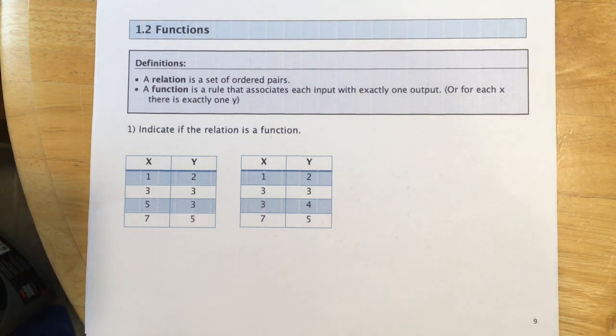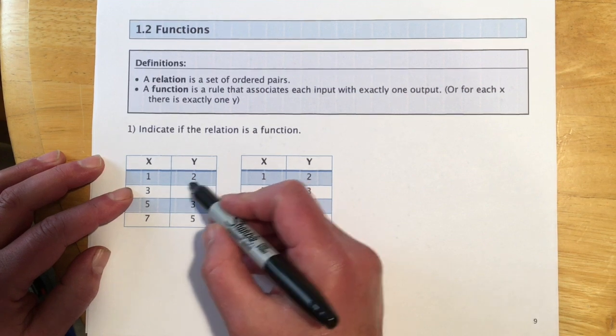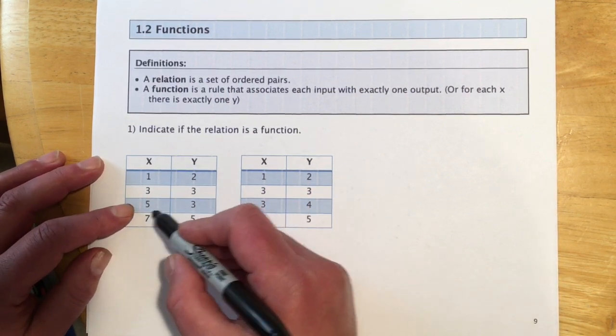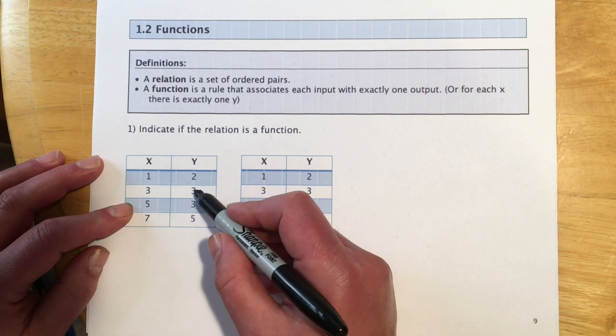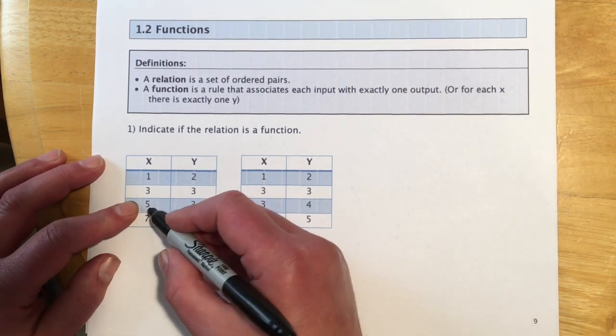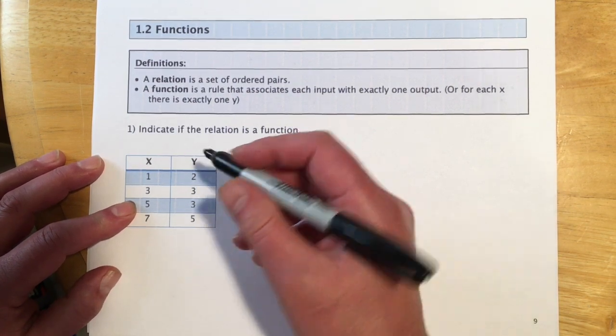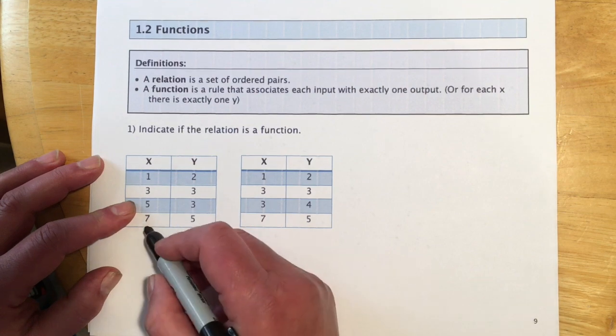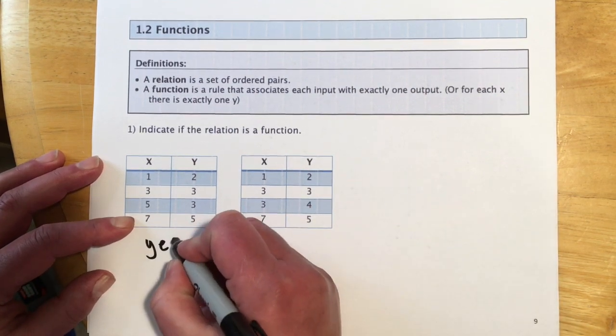First question is determining whether or not it's a function. Looking at this one, when x is 1, y is 2. When x is 3, y is 3. When x is 5, y is 3. You might pause there and kind of go, does that make it a function or not? Well, when x is 3, y is only 3. When x is 5, y is only 3. So we can have repeats in y, and that's just fine. It's when we see repeats in x that's going to be a problem. And then when the input is 7, the output is 5. So this one would say yes, that is a function.